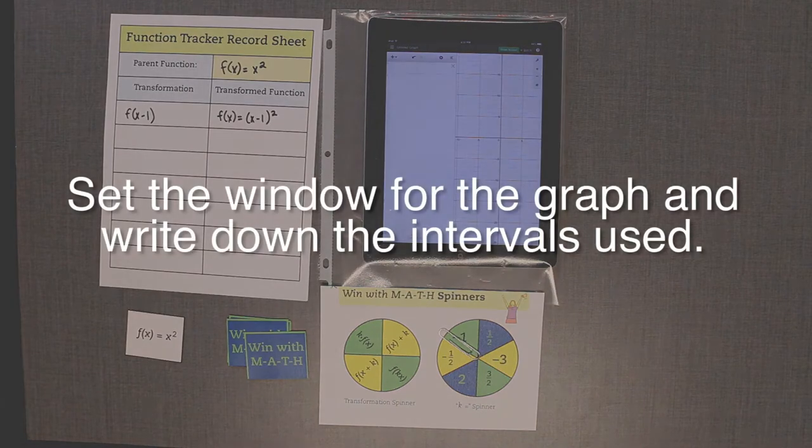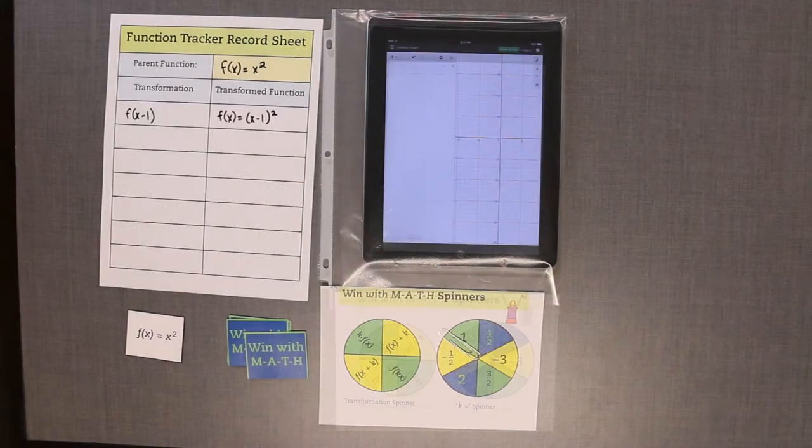Enter the parent function into the electronic graphing tool. Set the window for the graph and write down the intervals used so the screen can be reset to the same interval if needed.